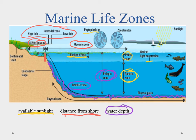We can combine these classifications to be more precise. For example, we can talk about the euphotic and neritic zones together, or an oceanic aphotic pelagic zone — a watery area out in the open, deep ocean. By joining these together we can be more specific about where in the ocean we're referring to.